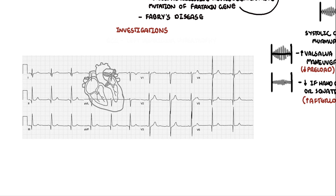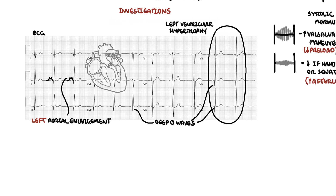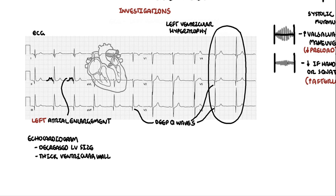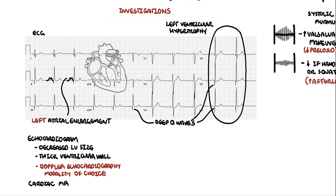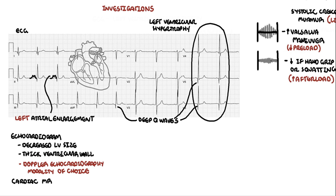ECG findings often show left ventricular hypertrophy, deep Q waves, and left atrial enlargement. On echocardiogram, there is decreased left ventricular cavity size due to the thick ventricular wall and thick interventricular septum, and ejection fraction may be reduced. Doppler echocardiography is the modality of choice for quantifying the left ventricular outflow tract gradient. Cardiac MRI is increasingly used for diagnosis, especially when echocardiography results are uncertain.